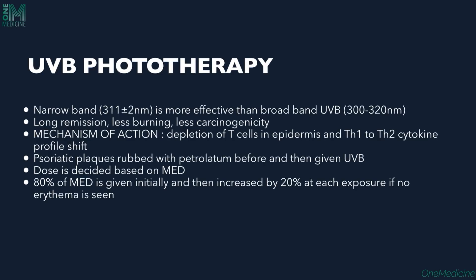Next we will talk about phototherapy of psoriasis, which is an important modality of treatment. We have both UVA and UVB therapy — that is ultraviolet radiation A and B therapy. Coming to UVB phototherapy, we have both broadband as well as narrowband radiations, but normally we use the narrowband spectrum which is around 311 plus or minus 2 nanometers.